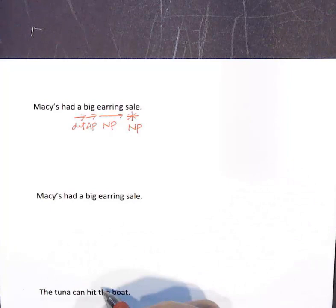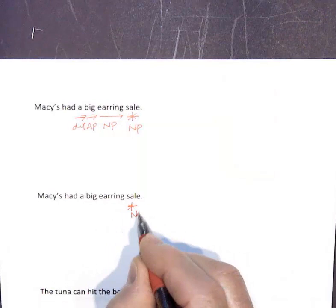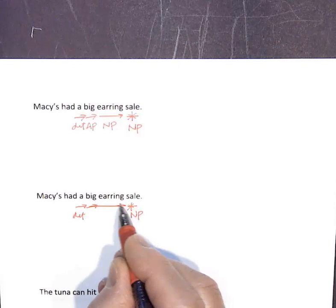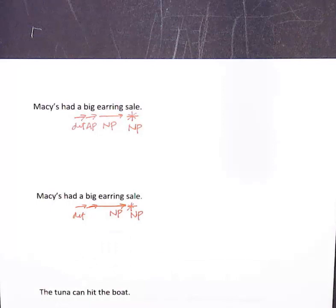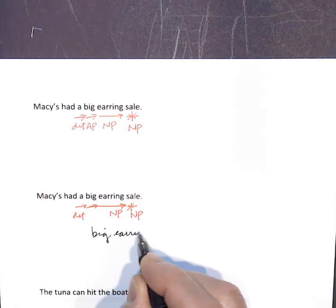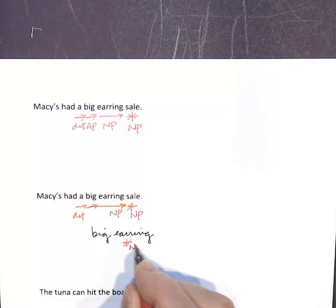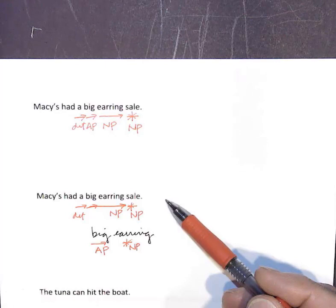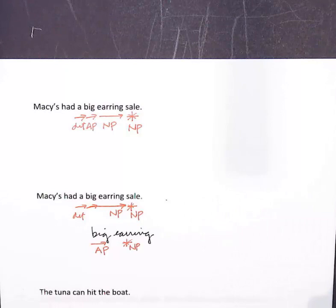A second way to interpret this sentence: 'sale' is still the head and still the object, and 'a' is a determiner. But now 'big earring' is treated as one noun phrase, where 'earring' becomes the new noun phrase head and 'big' is the adjective phrase modifier. This second parsing means that Macy's had a sale on big earrings.